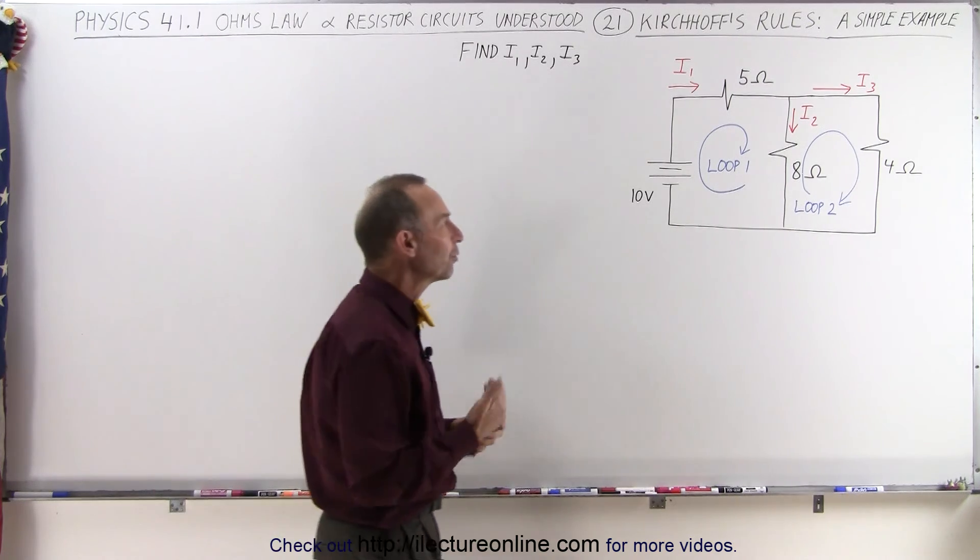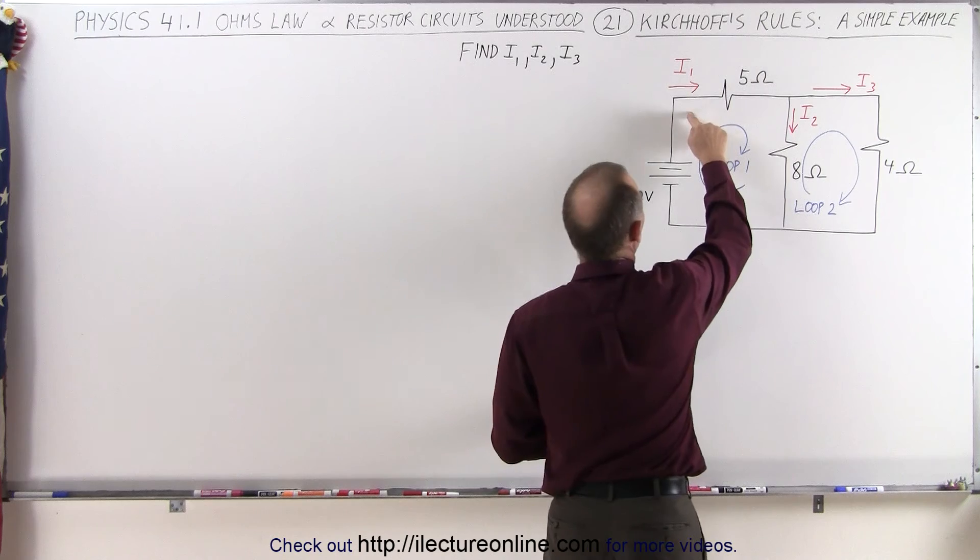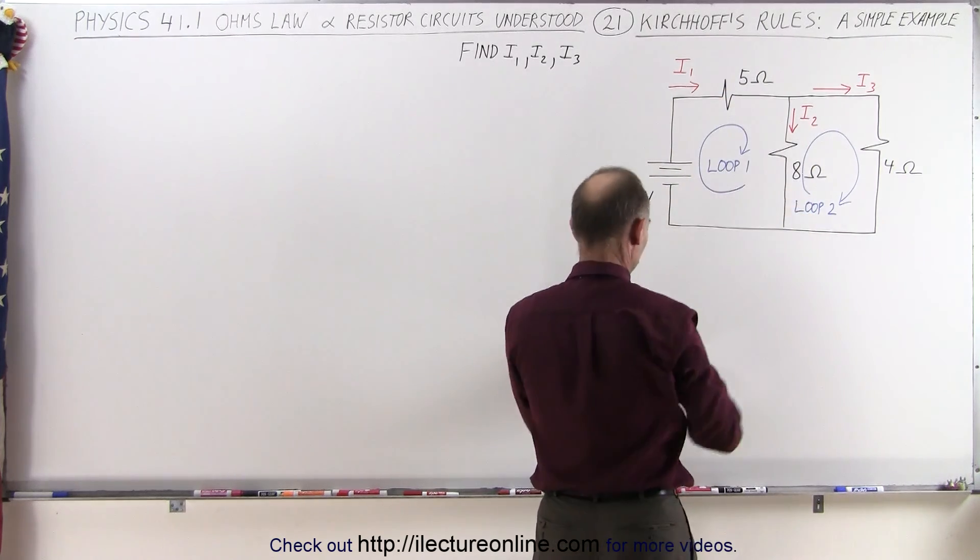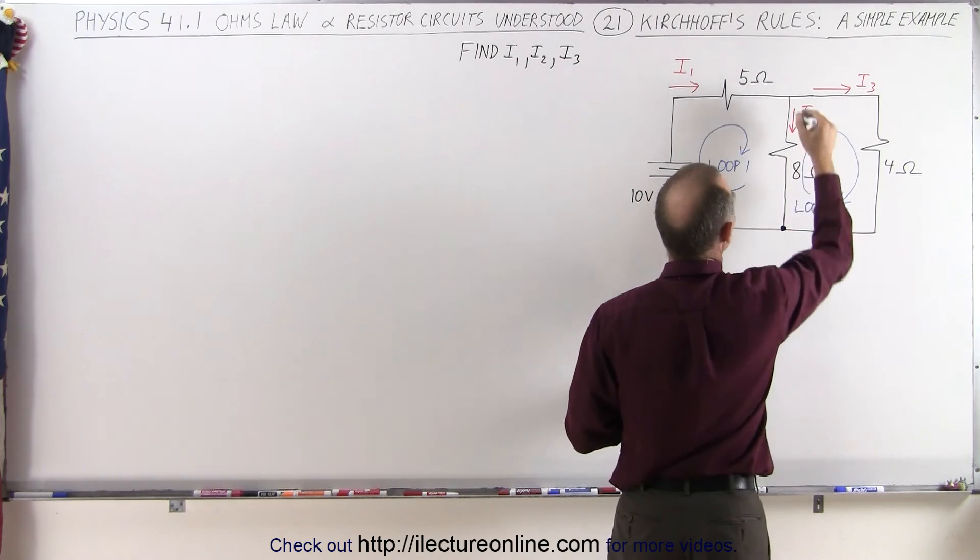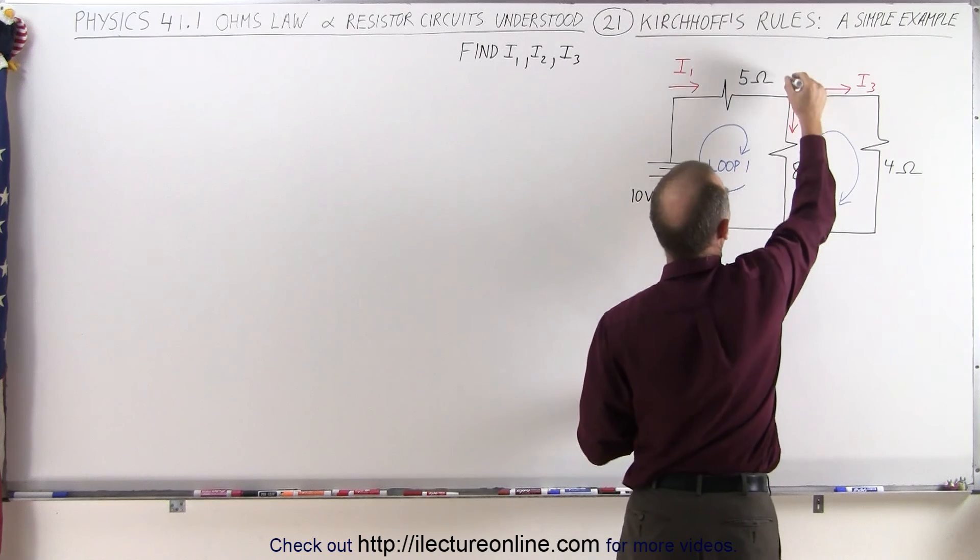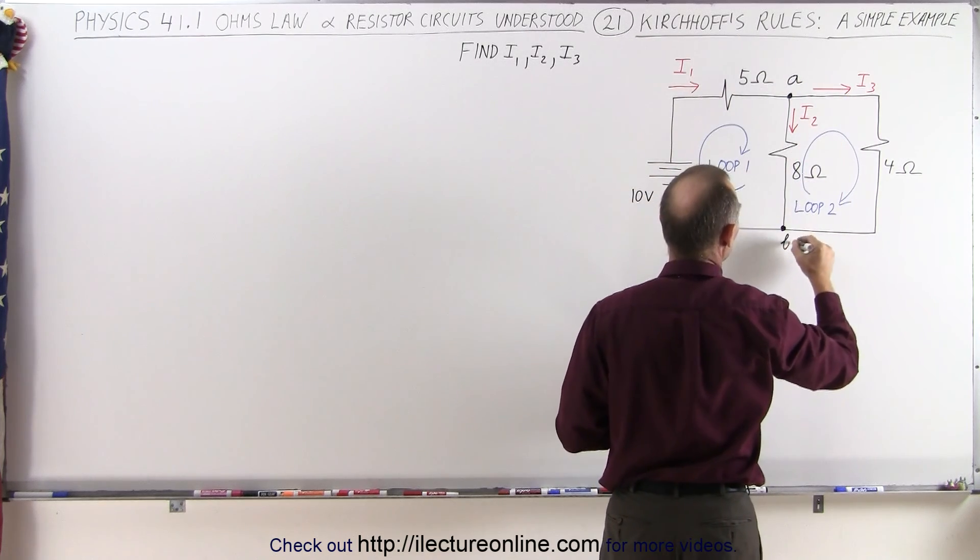What we need to do is realize that we have three separate currents: I1, I2, and I3, because we have three branches. If you indicate the branch point there and the branch point there, to go from this point to this point, let's call this branch point A and let's call this branch point B.